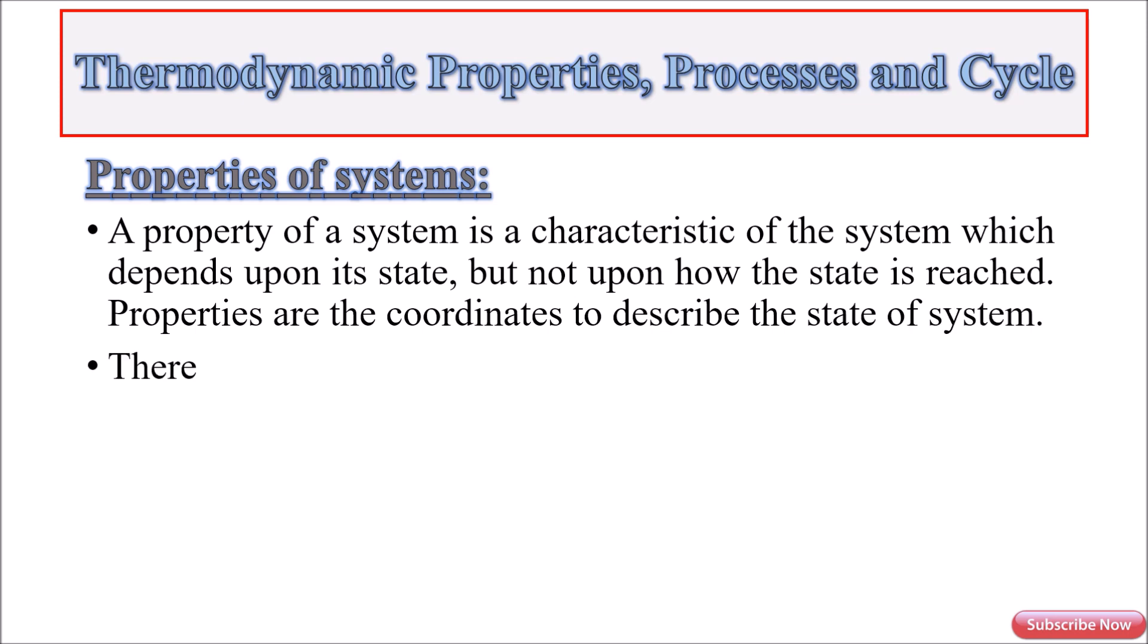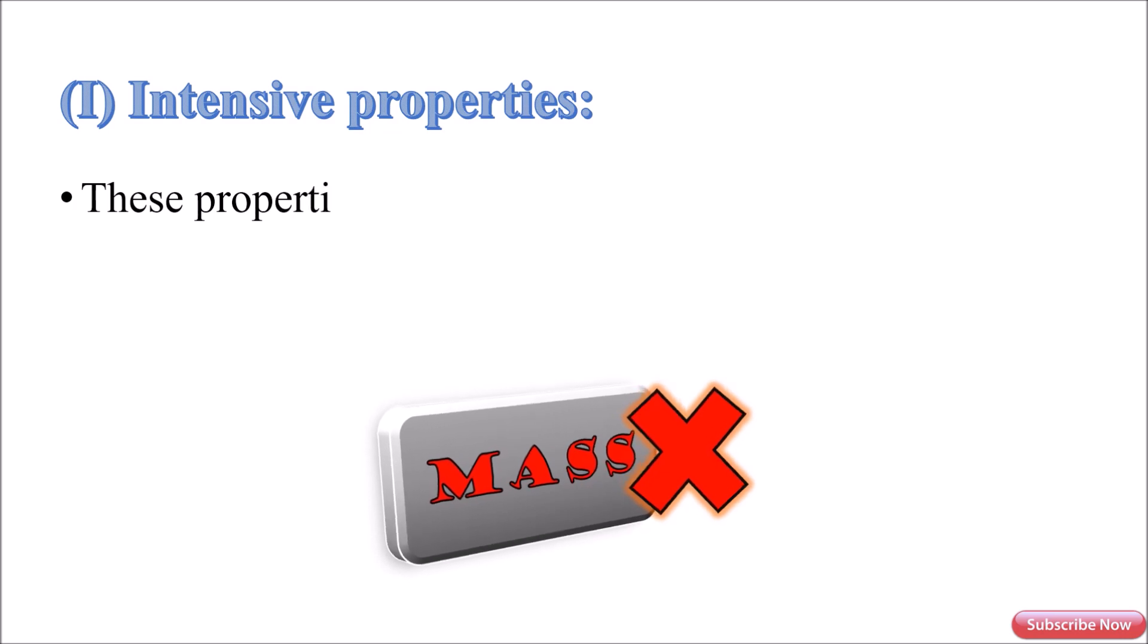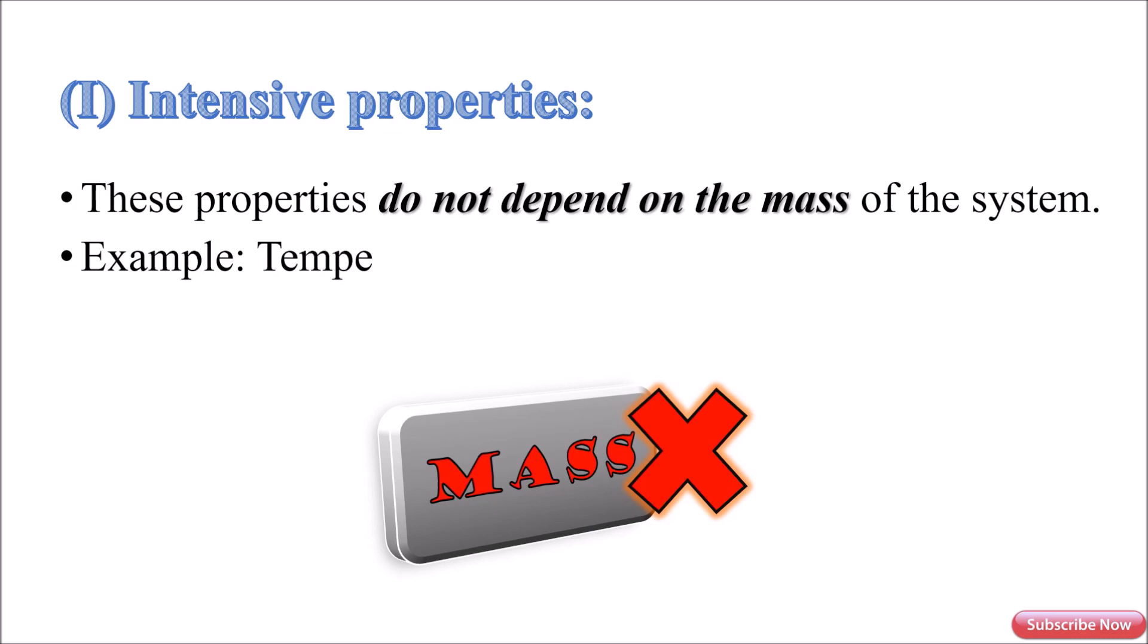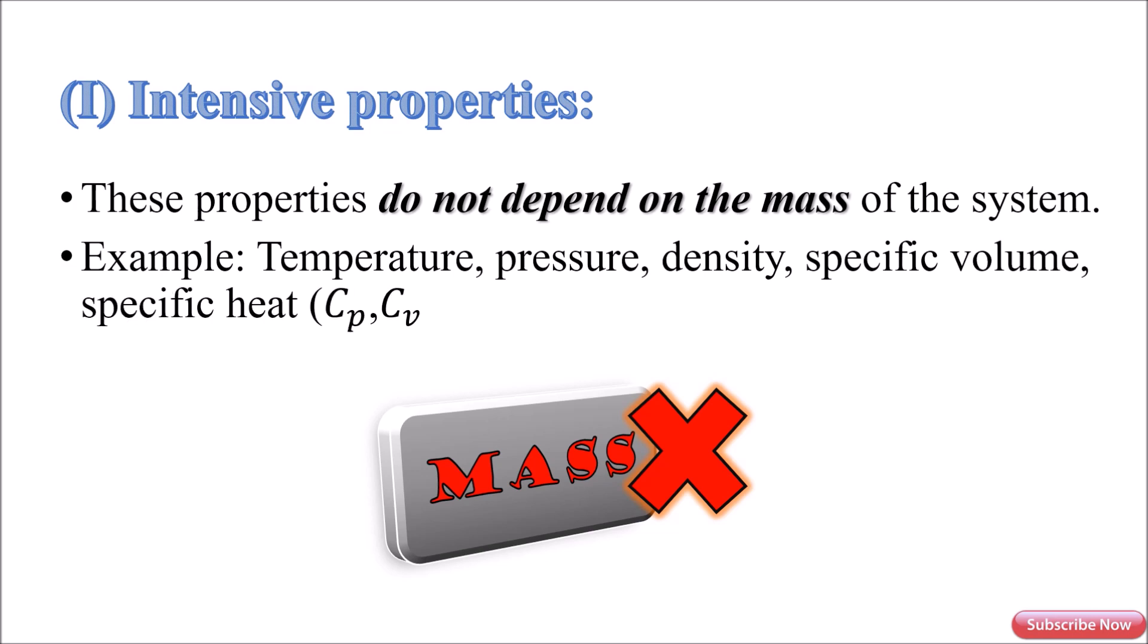There are two sorts of properties: one is intensive properties and another one is extensive properties. Now we will see intensive properties. These properties do not depend on the mass of the system. Examples include temperature, pressure, density, specific volume, specific heat, specific enthalpy, etc.